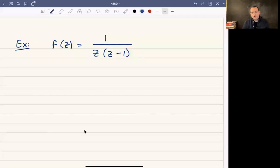So what I want to do next is talk about examples of Laurent expansion so that you can see what this kind of looks like in practice. I'm going to use the function f of z is one over the quantity z times z minus one.